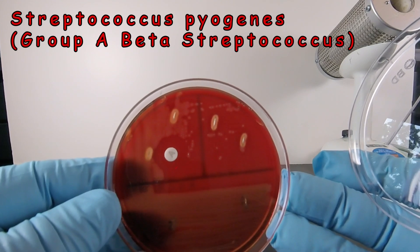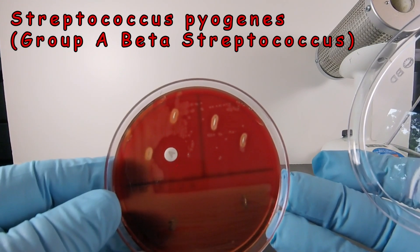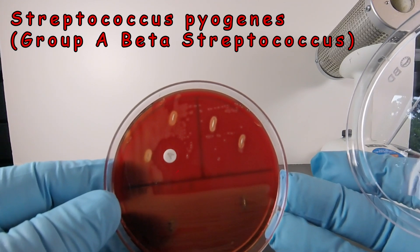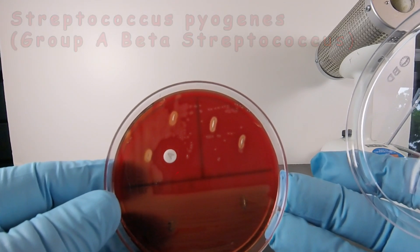So this would be Streptococcus pyogenes or the group A beta strep. Tiny colonies, beta-hemolysis, and sensitive to bacitracin.